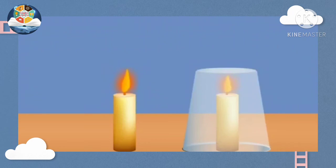What happens after some time? You will see that the candle covered with the glass goes off. Why? Because the candle covered with the glass could not get air to burn. A thing can keep burning only when it gets air.